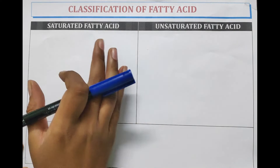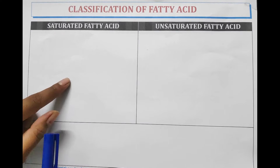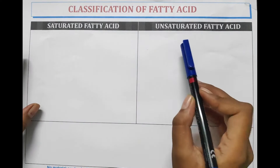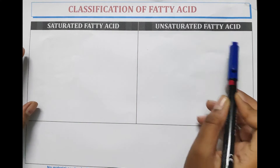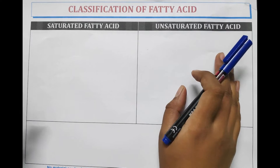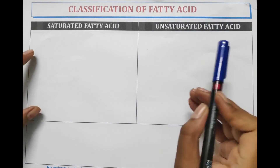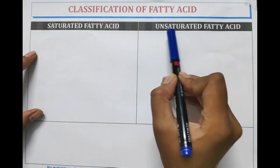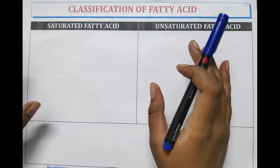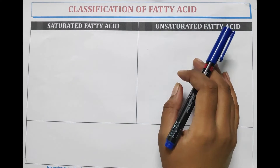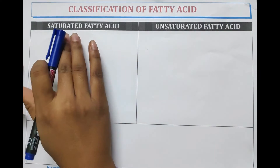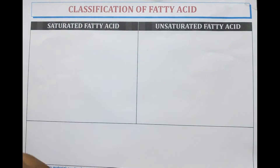Saturated fatty acids means fatty acids containing single bond, and unsaturated fatty acids means fatty acids containing double or triple bond — as unsaturated means unsaturation, i.e. double or triple bonds. Let's discuss saturated fatty acids.